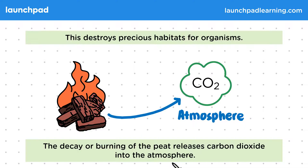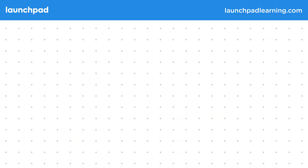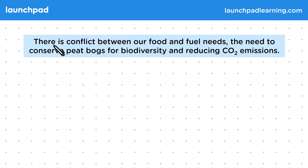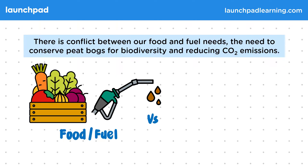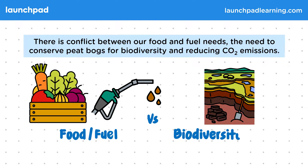So what's the key thing that you need to know for this course? There is conflict between our food and fuel needs, the need to conserve peat bogs for biodiversity, and reducing CO2 emissions. We have to balance our use of this resource with its impact on the Earth. You need to describe this conflict, mentioning what we use peat for and why it's an issue for the environment.